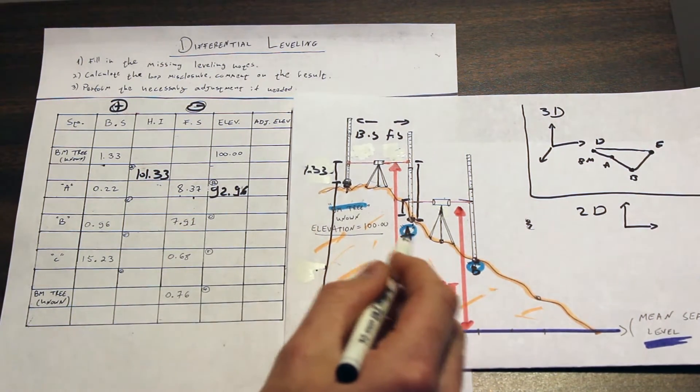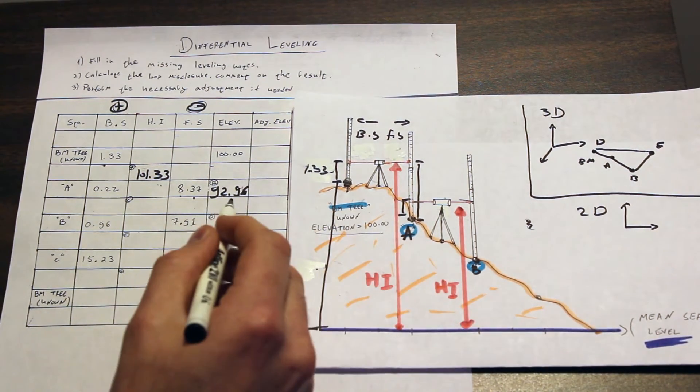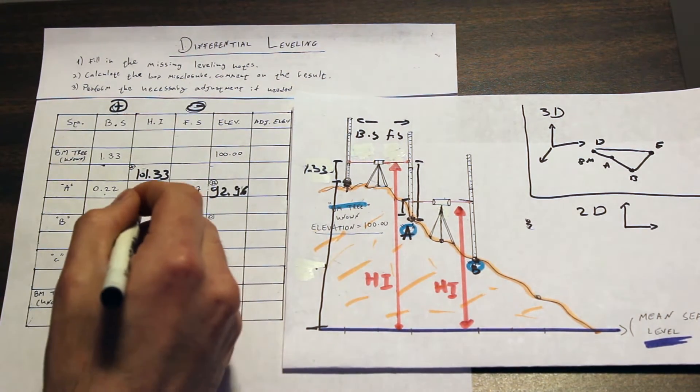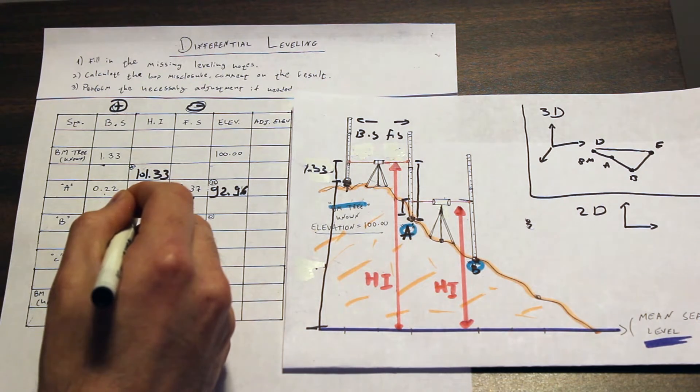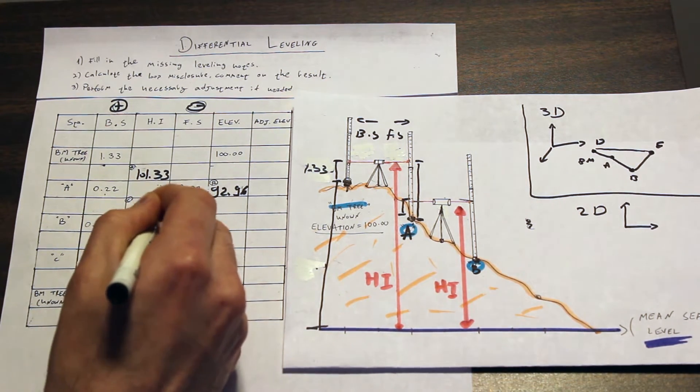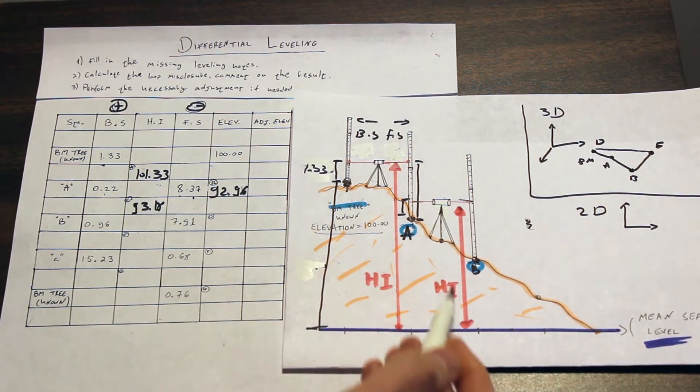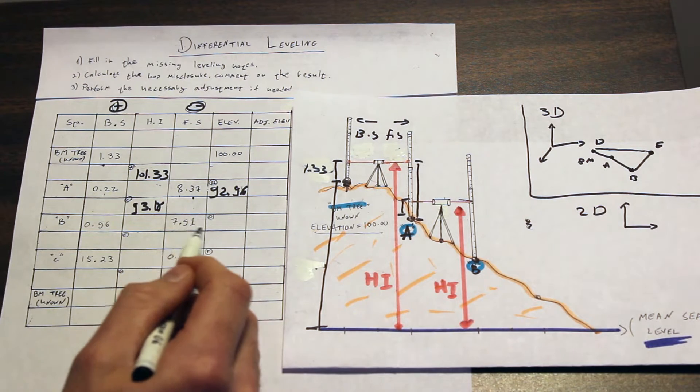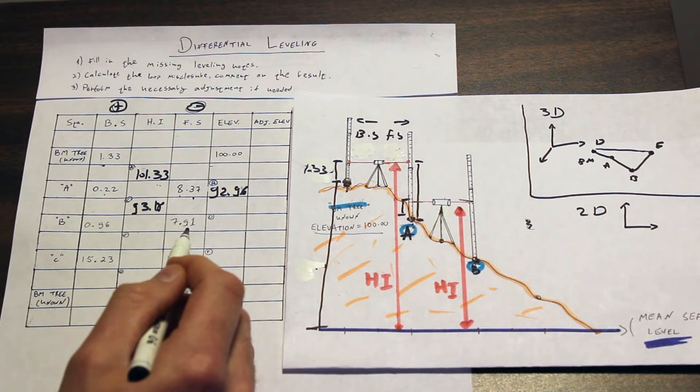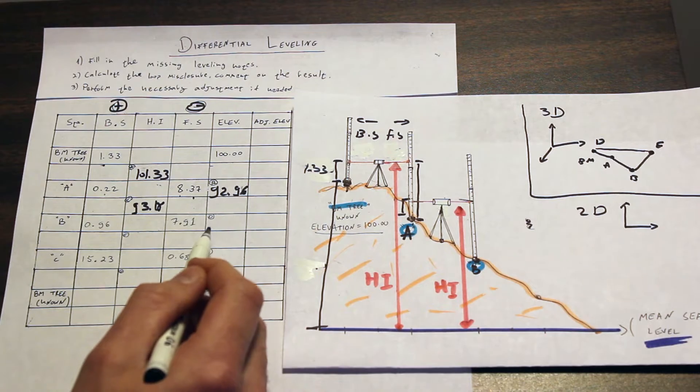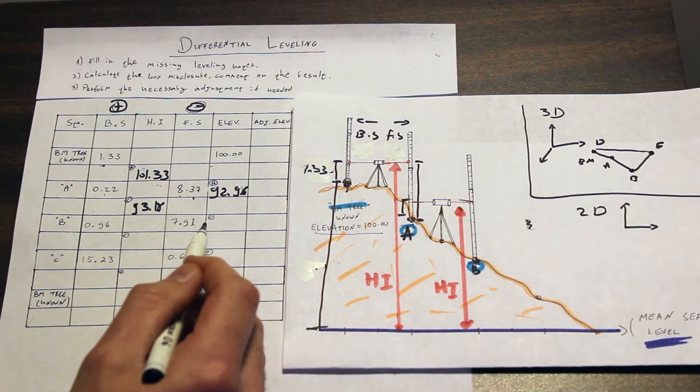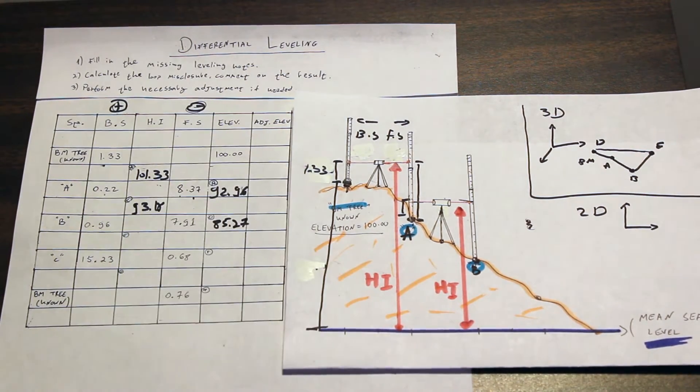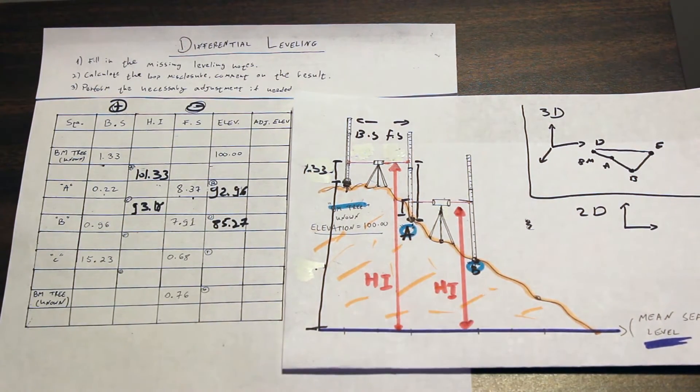Our elevation at point A, which is known, is 92.96 meters. Adding those two up we get the new height of the instrument, which is 93.18 meters, and that's the second pink line that you can see over here. Deducting the foresight from the height of the instrument gives us the elevation at point B, which is 85.27 meters. And we got the elevation at point B.